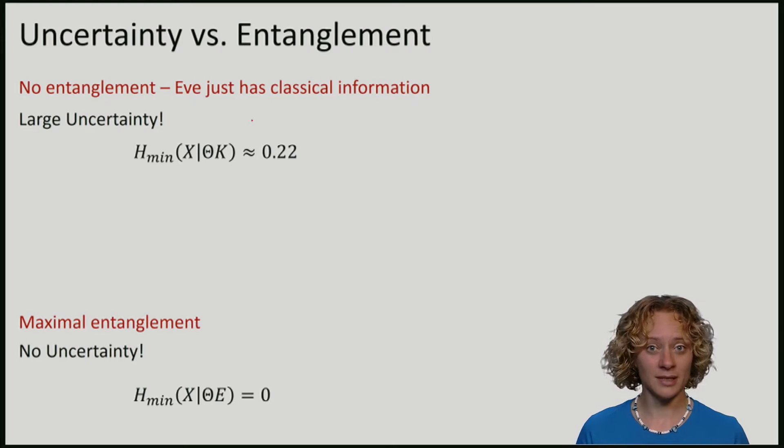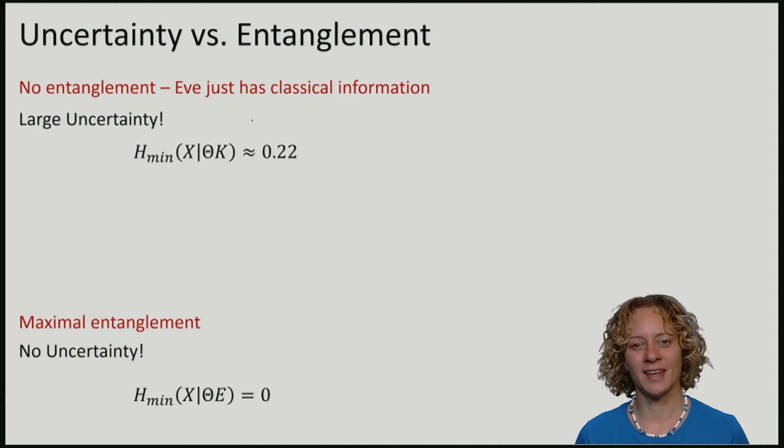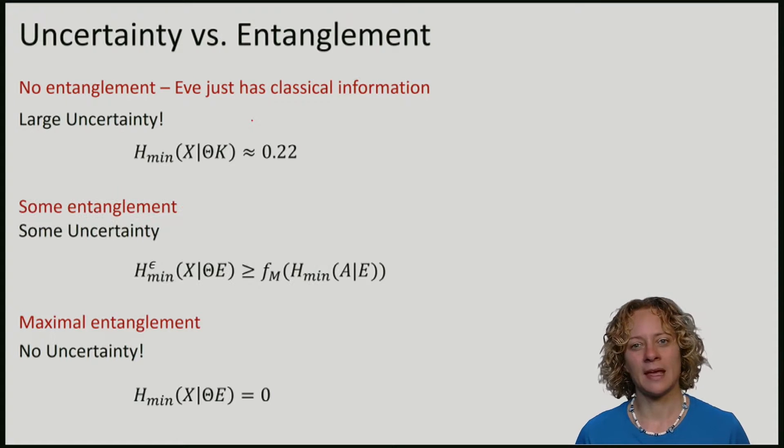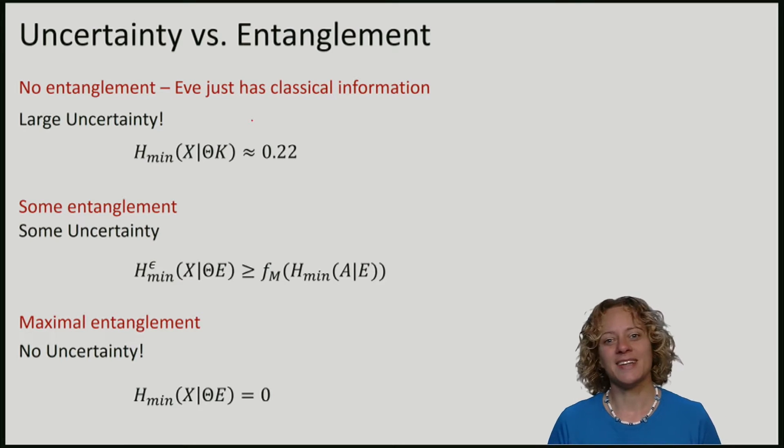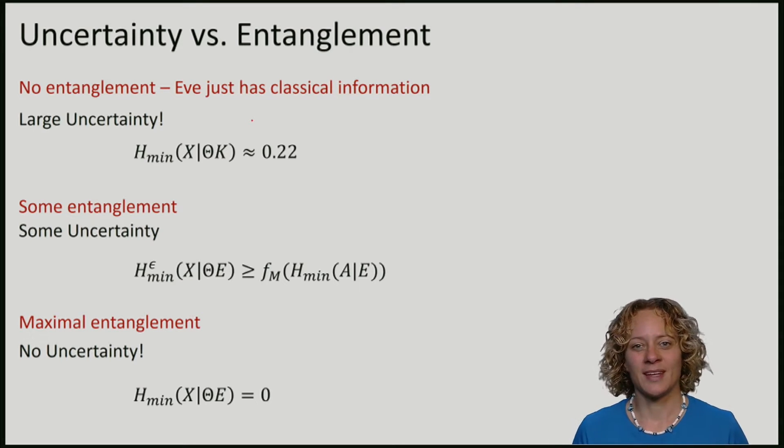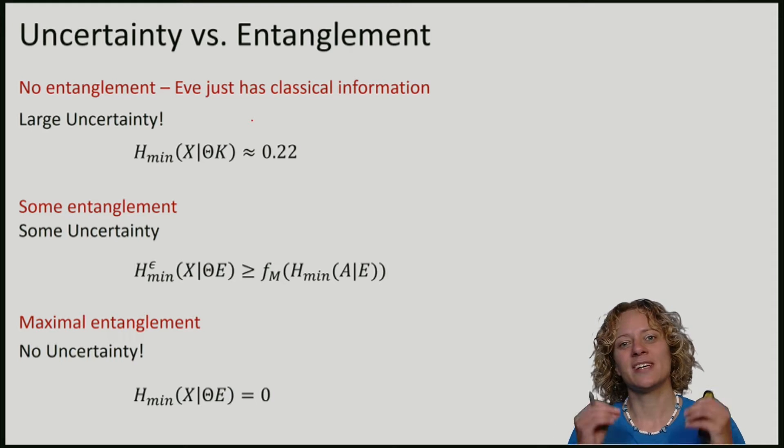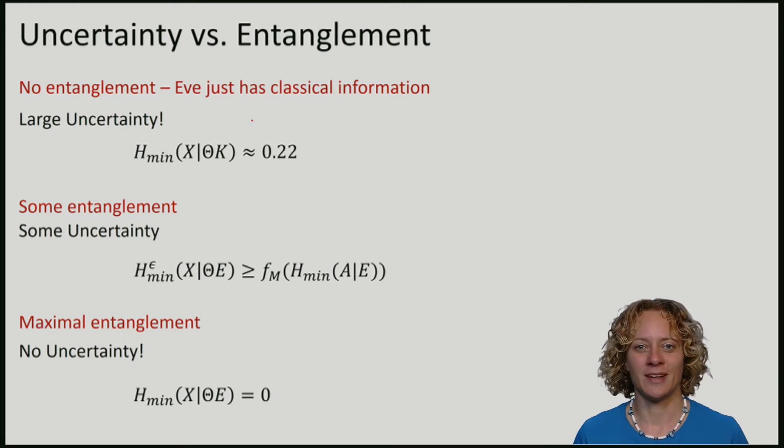It turns out that there is quite a nice trade-off between these two extremes. If Eve is somewhat entangled with Alice, then there is also some uncertainty and this can be quantified. These are known as entropic uncertainty relations with quantum side information, and you will find pointers to the literature in the lecture notes.